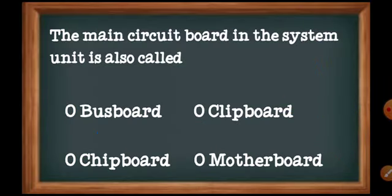Question number 9: The main circuit board in the system unit is also called — Options are: A) Bus board, B) Clipboard, C) Chipboard, D) Motherboard.